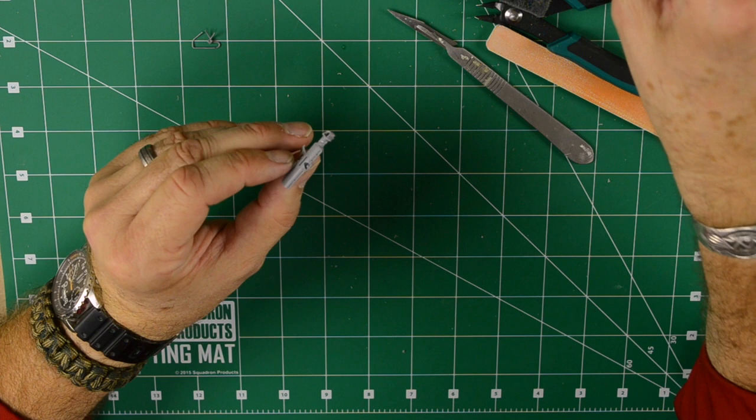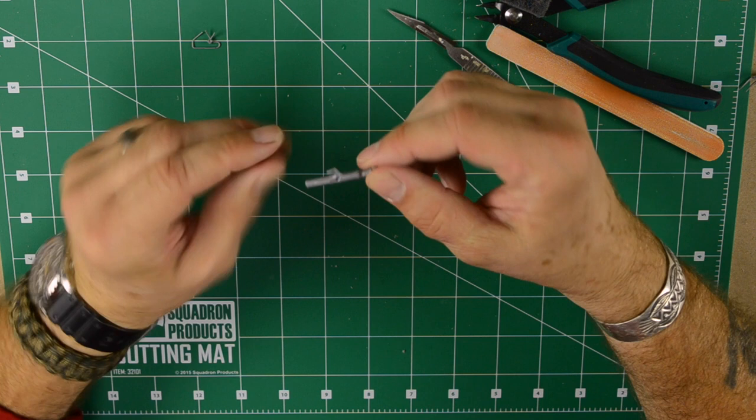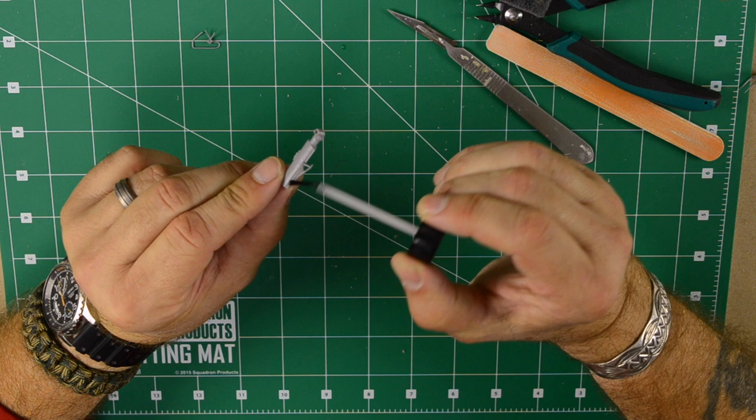Putting those two halves together, it hardly leaves any seam line. That's a plus. You don't have to worry about cleaning the seam lines here or sanding them.